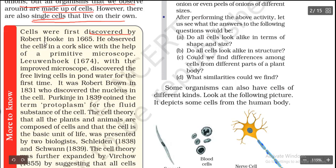Cells were first discovered by Robert Hooke in the year 1665. He observed cells in a cork slice using a primitive microscope. You must remember: Robert Hooke, year 1665, discovered cells using a simple microscope.